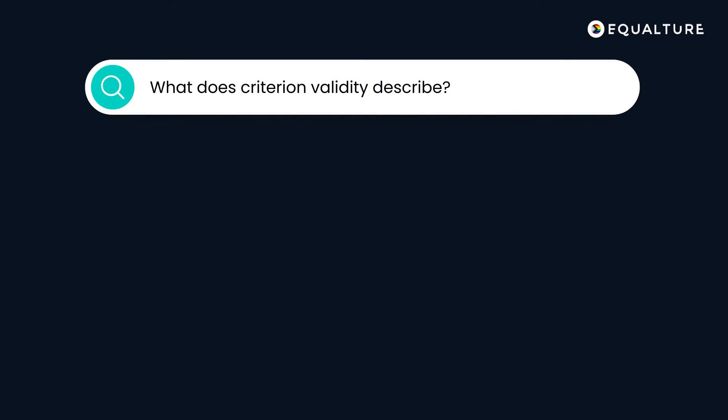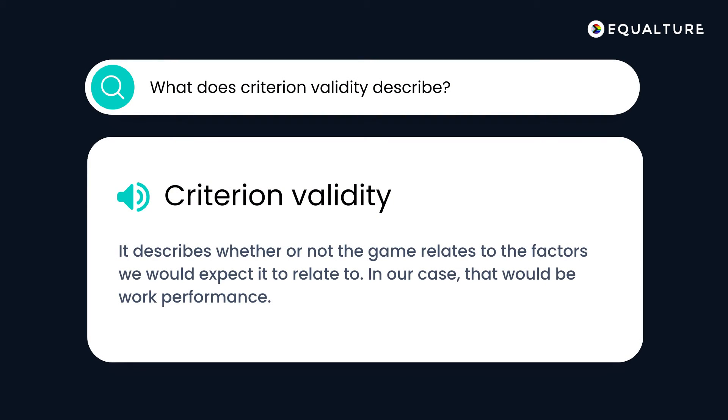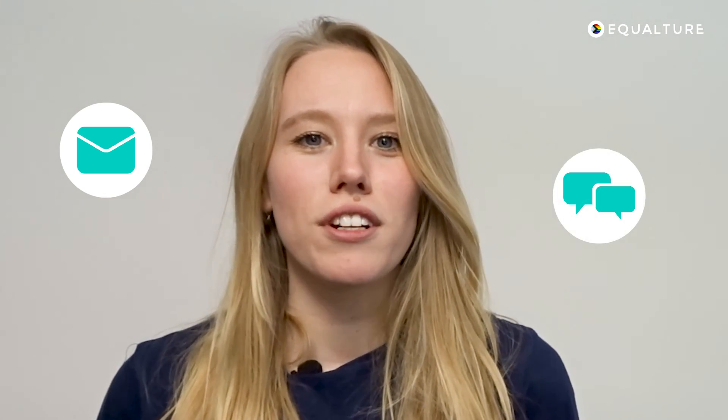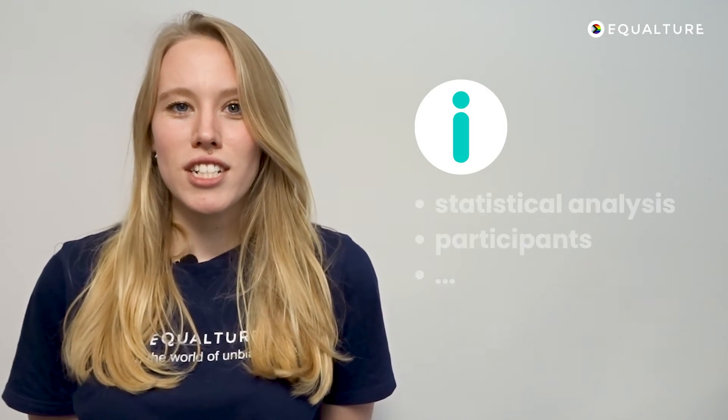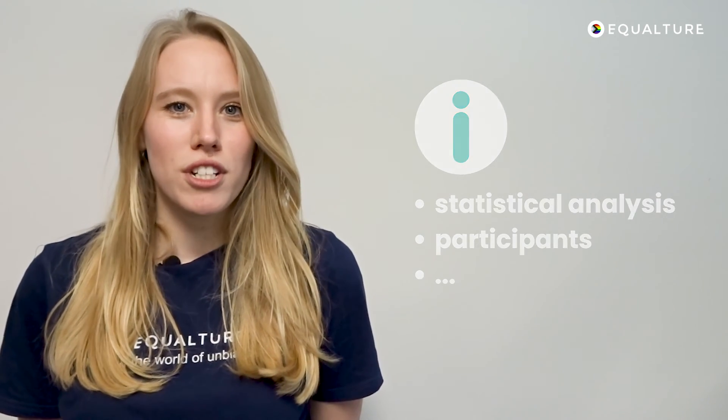Criterion validity describes whether or not the game relates to the things that we expected it to relate to — in our case, that would be work performance for example. All validation reports are publicly available, so if you would like to have a look at them, please contact your contact person at eCulture or start a live chat in our dashboard. They contain a lot more information about our statistical analyses, about our participants, and a lot more.